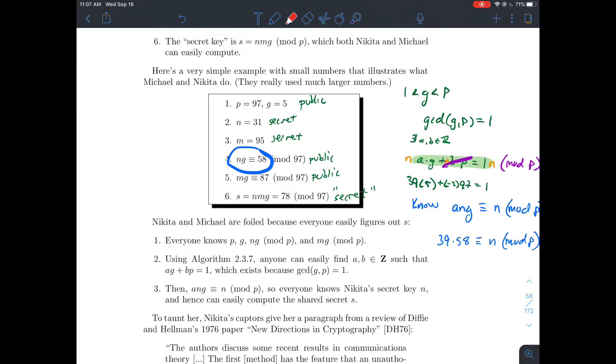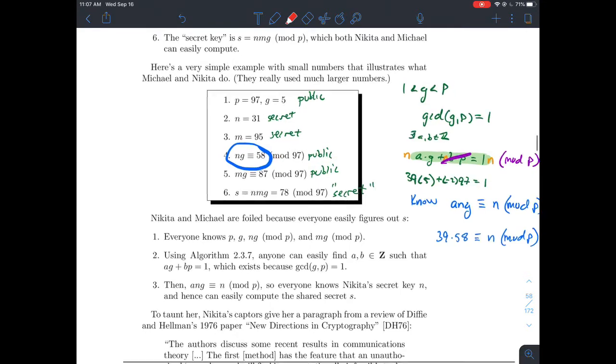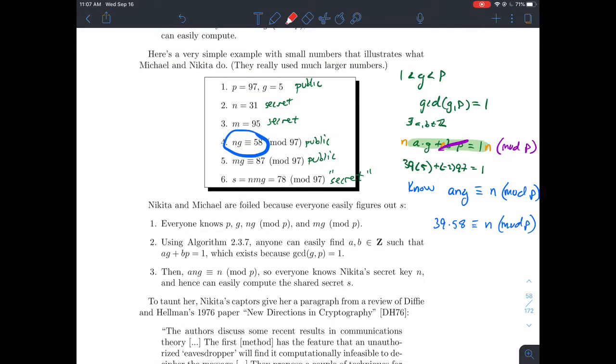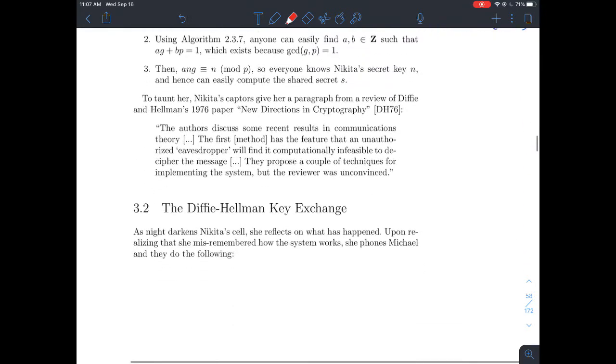Now what Nikita and Michael can do is they can figure out what their shared secret key is, which should be theoretically a key that only the two of them can compute. Now what's wrong with this example here is that it's not too hard to figure out what N is. In other words, Nikita's secret key wouldn't be very secret here. Given G, and given that N times G is equal to 58, it's not too hard to have a computer figure out that other factor. And similarly, with Michael's key, if M times G is 87 and you know G, it's not too hard to figure out what M is. So that's why that system is bad.